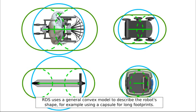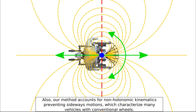RDS uses a general convex model to describe the robot's shape, for example using a capsule for long footprints. Also, our method accounts for non-holonomic kinematics preventing sideways motion, which characterize many vehicles with conventional wheels.